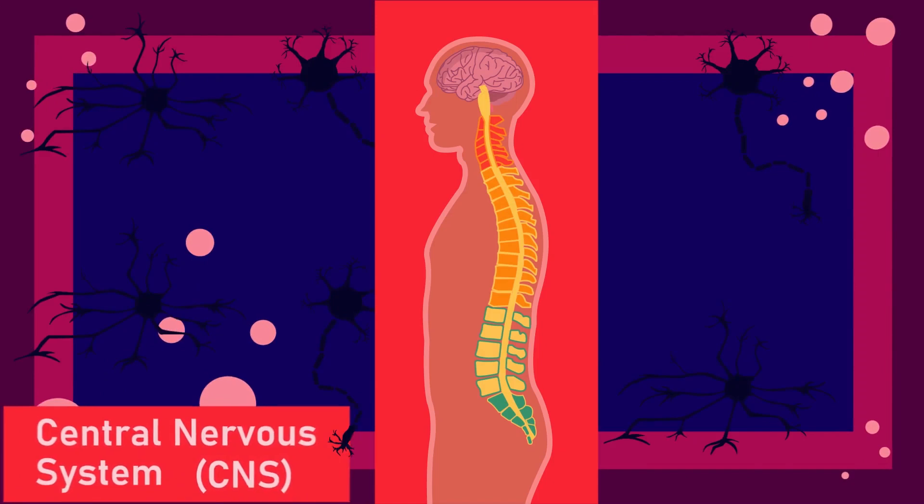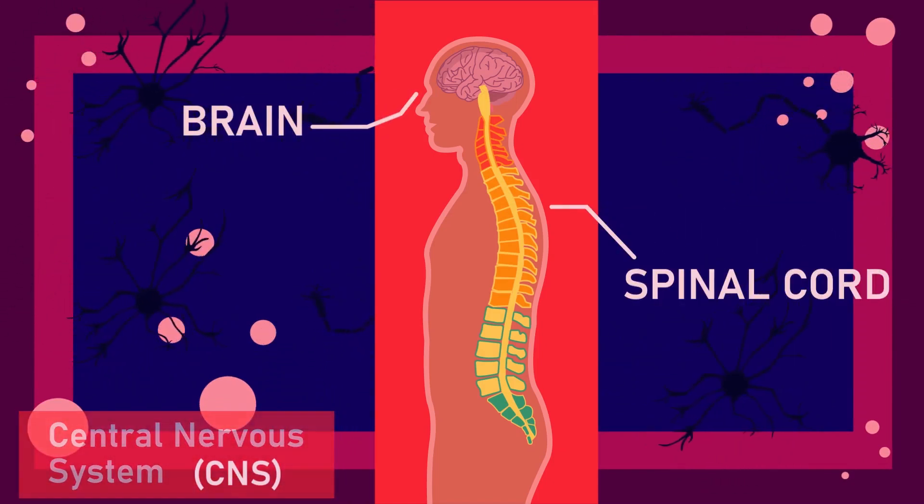Concerning the structure of this complex machinery, it's mainly divided into central nervous system, which constitutes the brain and the spinal cord, and the rest of the system is classified as peripheral nervous system.